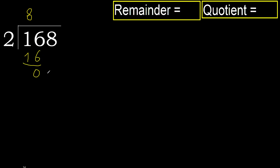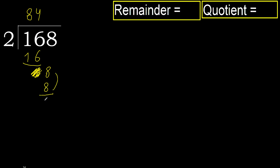Next. Eliminate 0 on this side, bring down 8. 2 multiplied by 5 is 10 — it's greater. Multiply by 4: 8 is not greater. Subtract, result is 0.